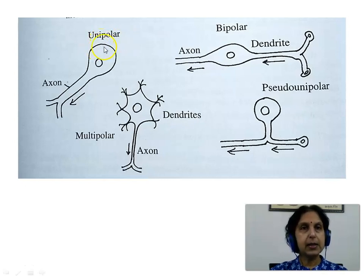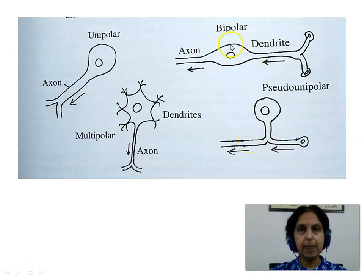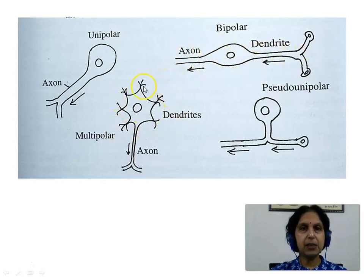This picture shows us the four types of neurons. The unipolar neuron has a single process which is the axon. The pseudo-unipolar neuron has a single process which then divides into two — peripheral and central. The bipolar neuron has one axon and one dendrite, and the multipolar neuron has a single axon and multiple dendrites.